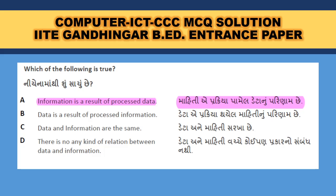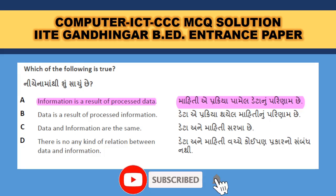Which of the following is true? Information is a result of processed data. When you have raw data, you process it and it is converted into meaningful information — so information is a result of processed data.